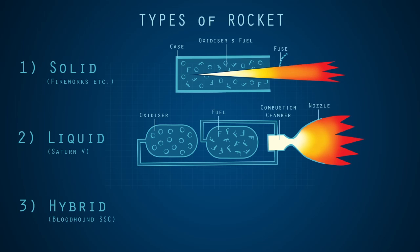The third type of rocket uses elements of both other systems. The oxidizer is stored separately, and the fuel forms a solid lining on the inside of the rocket tube.